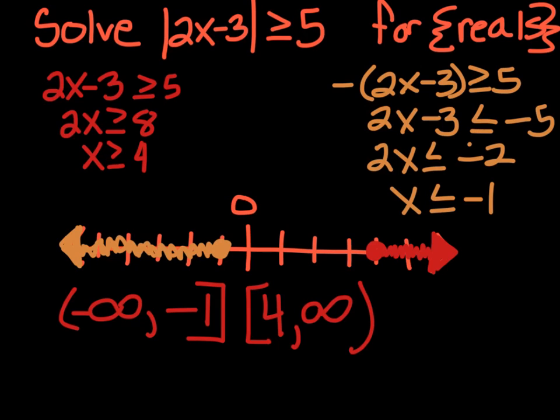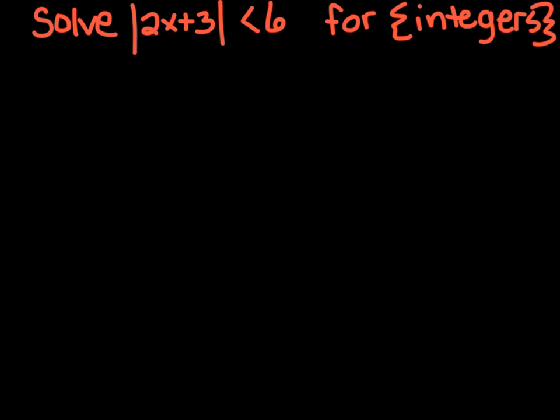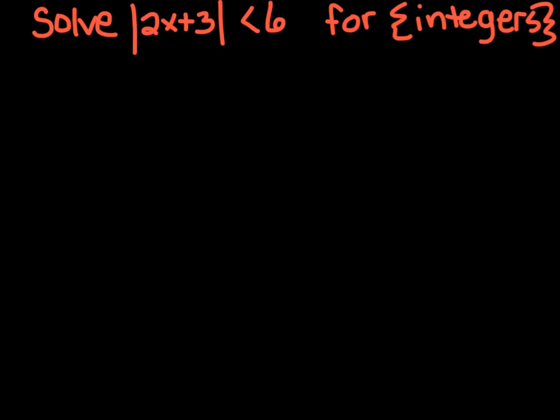In our last example we were solving for all reals, so whatever answers we got were included. But this time we're going to solve the absolute value of 2x plus 3 is less than 6, but only for integers. We're going to follow the same steps: isolate the absolute value — which it already is — and then split it into two inequalities. So we've got 2x plus 3 is less than 6, and the negative of (2x plus 3) is less than 6.